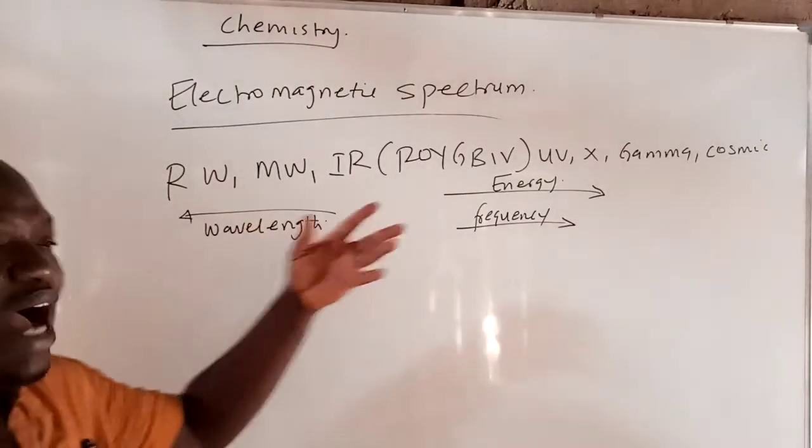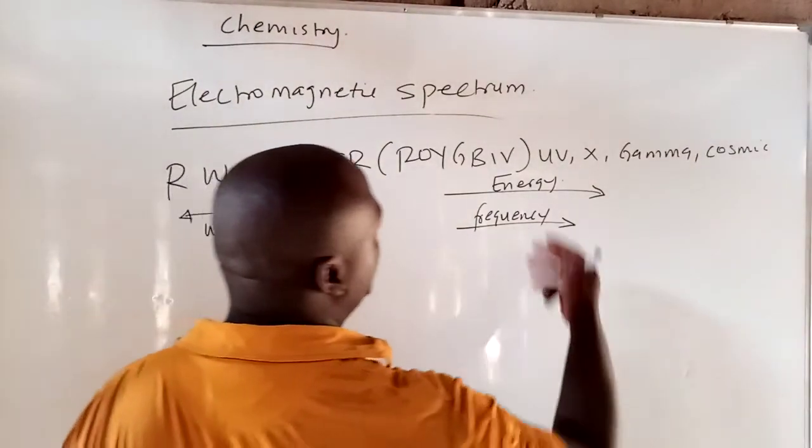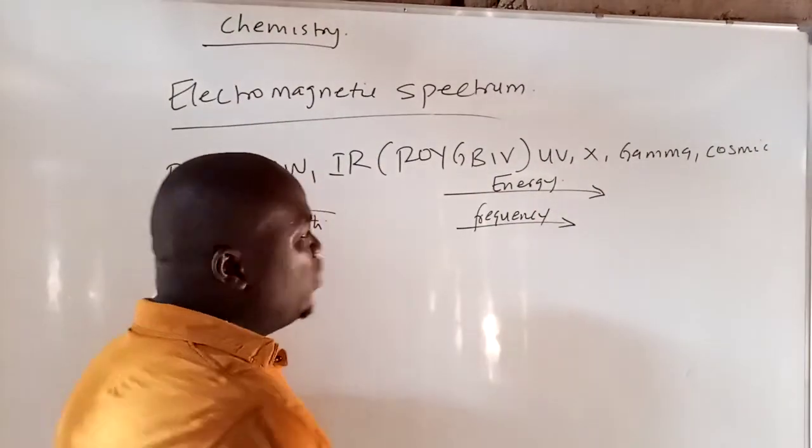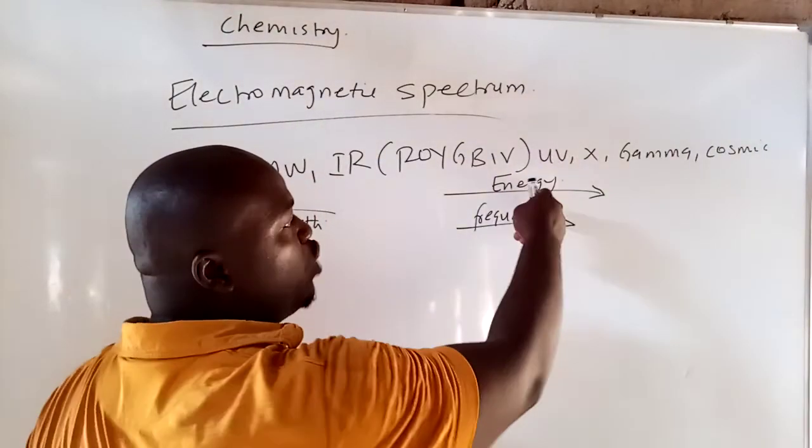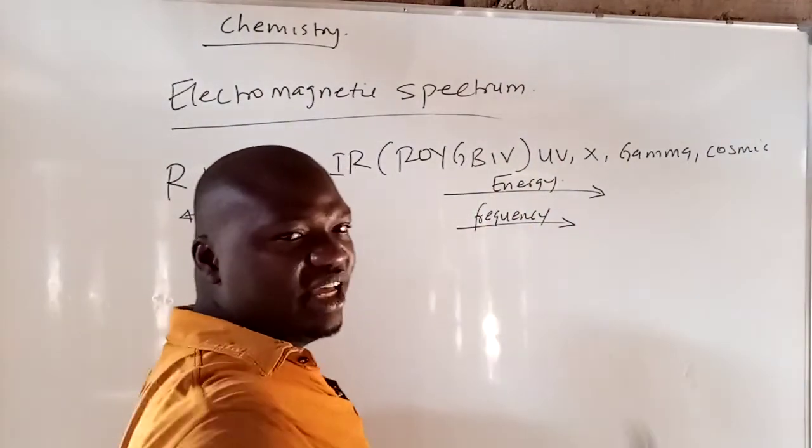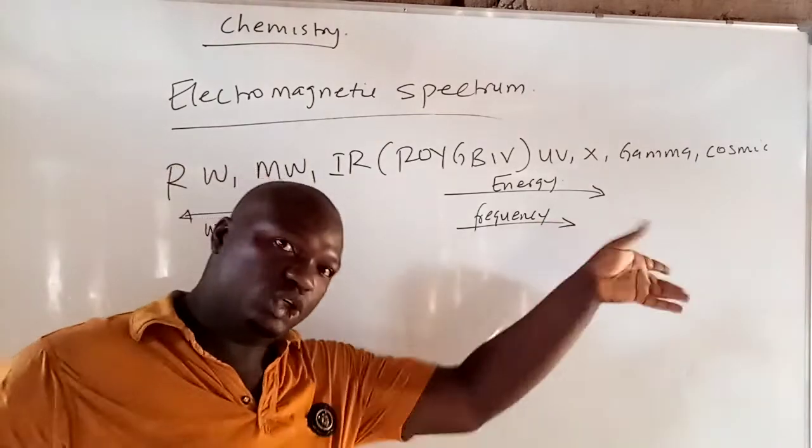Now, they will ask you again, in JAMB or in WAEC, most of all this in JAMB, and they will say ultraviolet and X-ray, which one have the highest energy? The one that has the highest energy, of course, is the X-ray. Because as you are moving to the right, the energy is increasing. And as the energy is increasing, the frequency is also increasing.